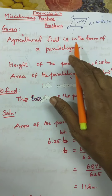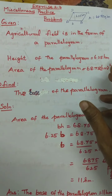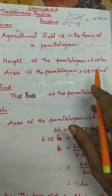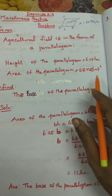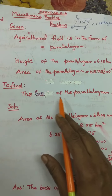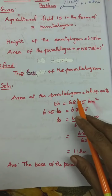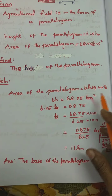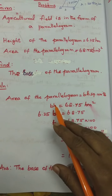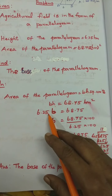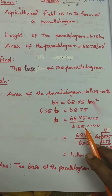The agricultural field is in the form of a parallelogram. Height of the parallelogram is 6.25 hectometres. Area of the parallelogram is 68.75 square hectometres. To find the base: area of parallelogram = B × H. So B × 6.25 = 68.75, therefore B = 68.75 ÷ 6.25.